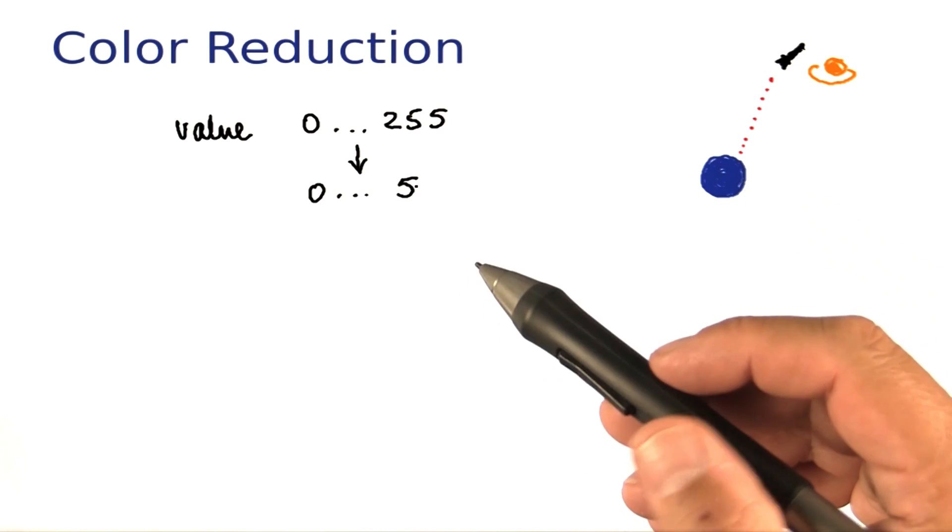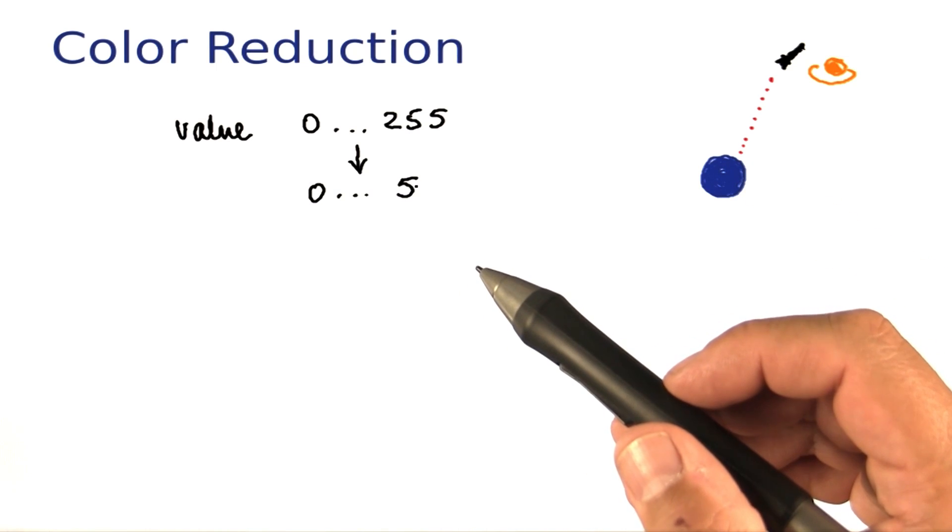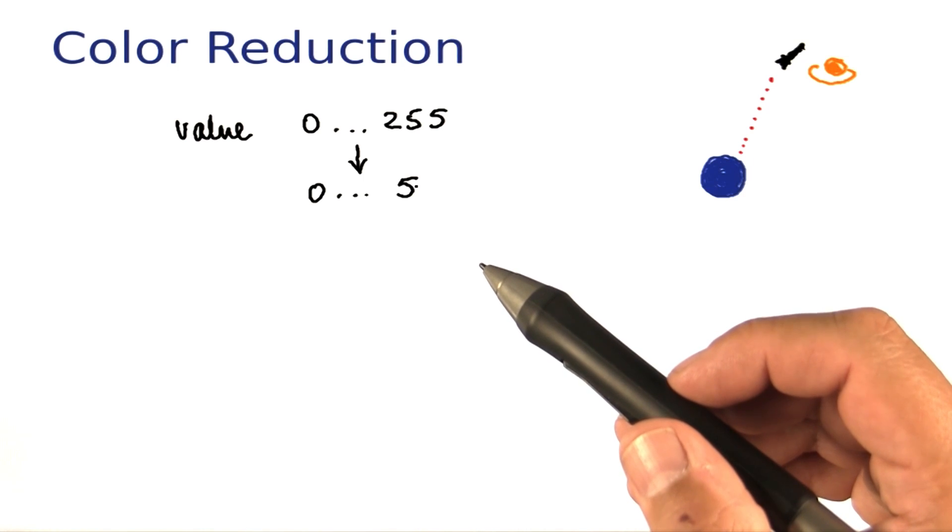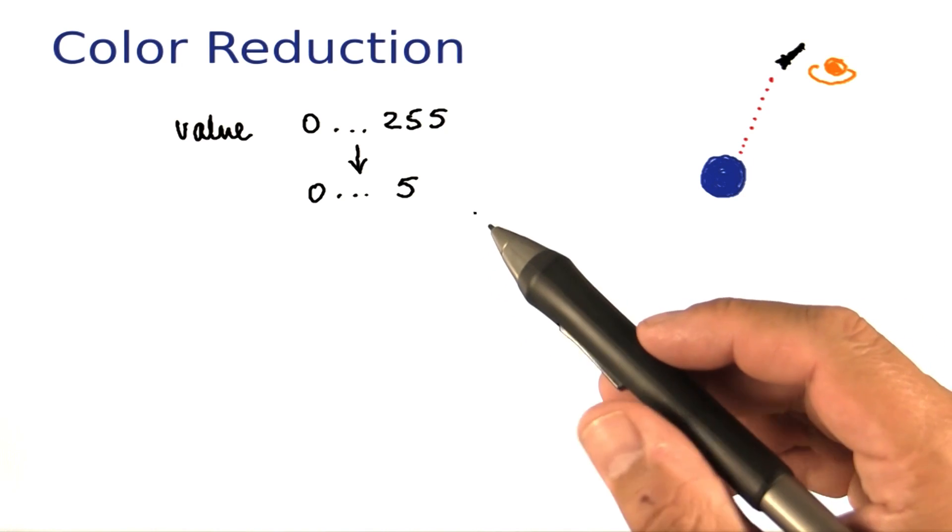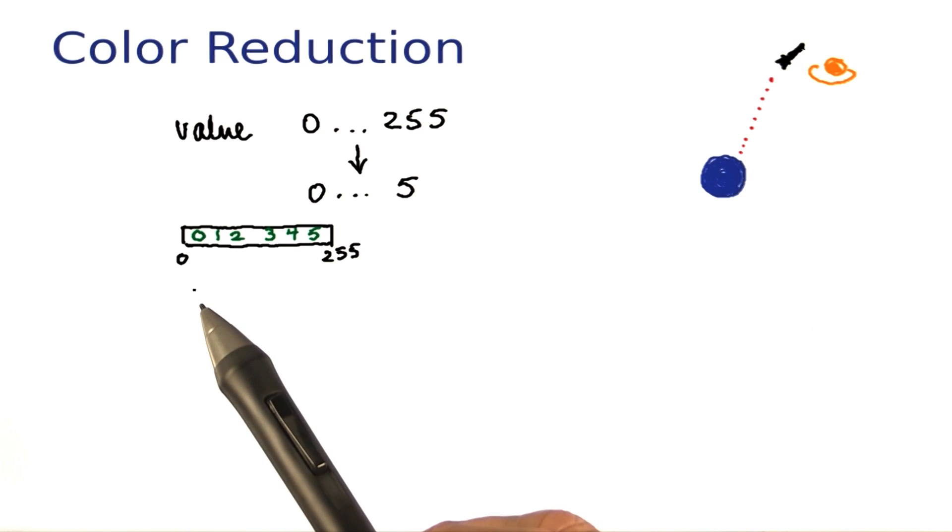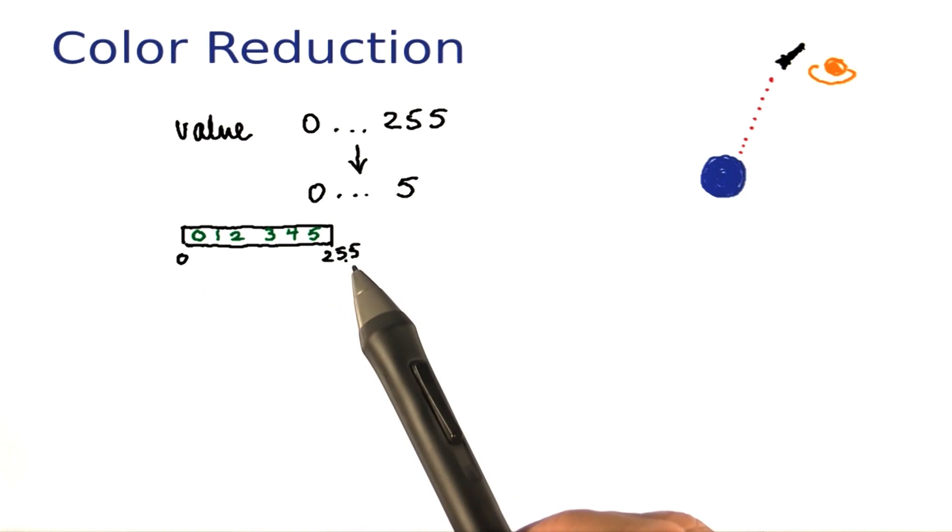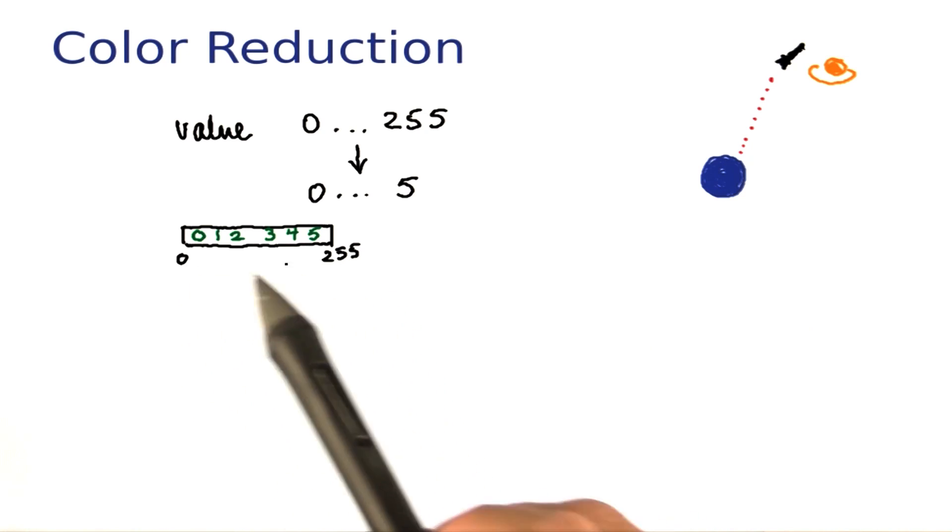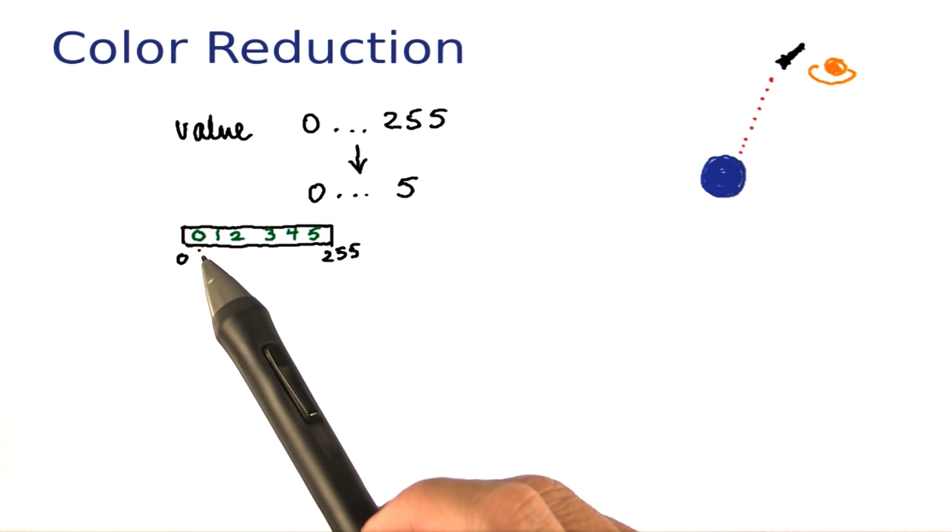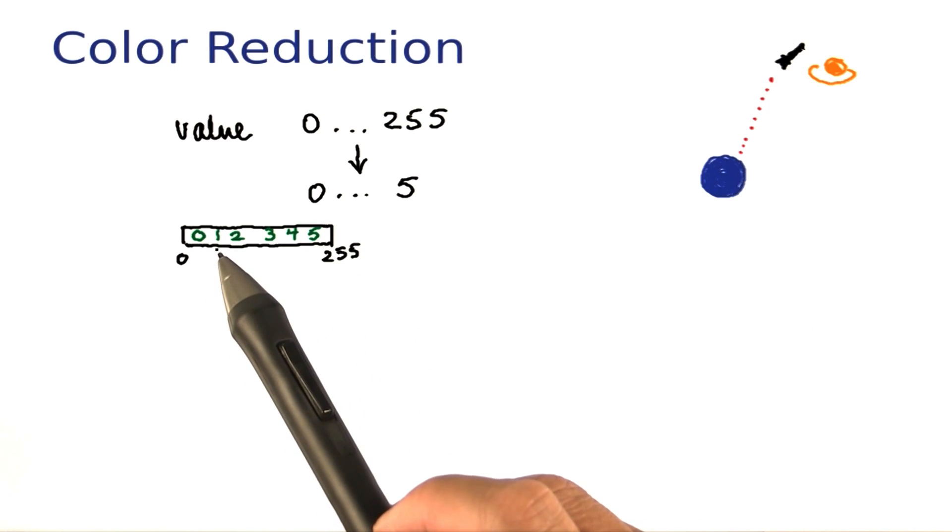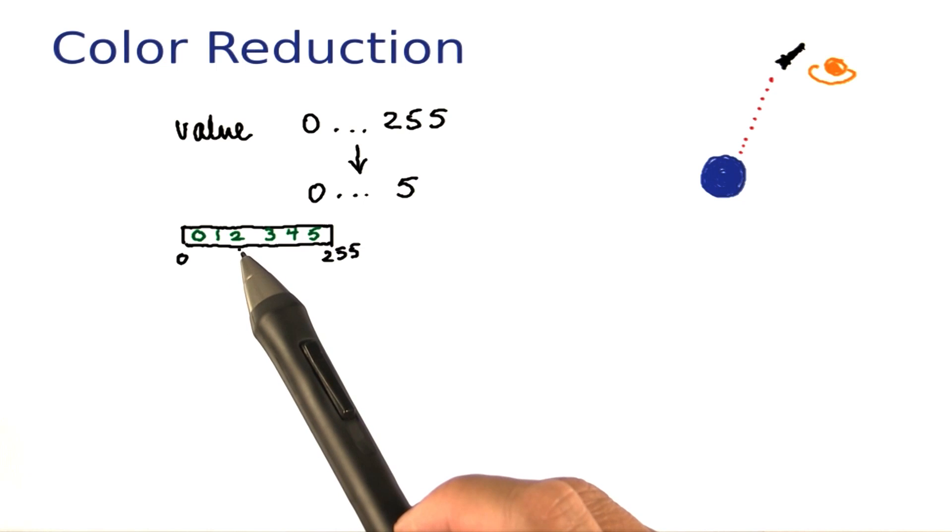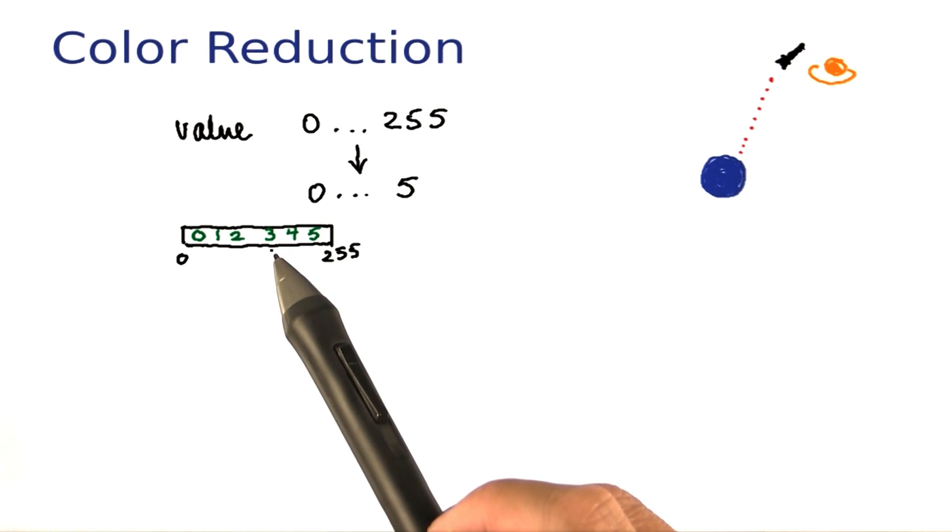So I'd like to cut down this range into the much smaller range from 0 to 5, and I'd like to do that in a uniform way. What I mean by that is if I look at the interval of numbers between 0 and 255, approximately one-sixth of them should map to 0, the next sixth to 1, the next sixth to 2, and so on.